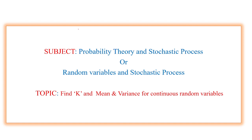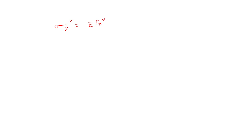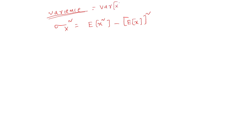I am going to explain variance for continuous random variables with an example to find the k value. We know that variance is the second mean, denoted sigma x squared, equal to E(x²) minus [E(x)]². This is the second mean variance. If the first mean is not sufficient for analysis, then we use variance, denoted as variance of x.